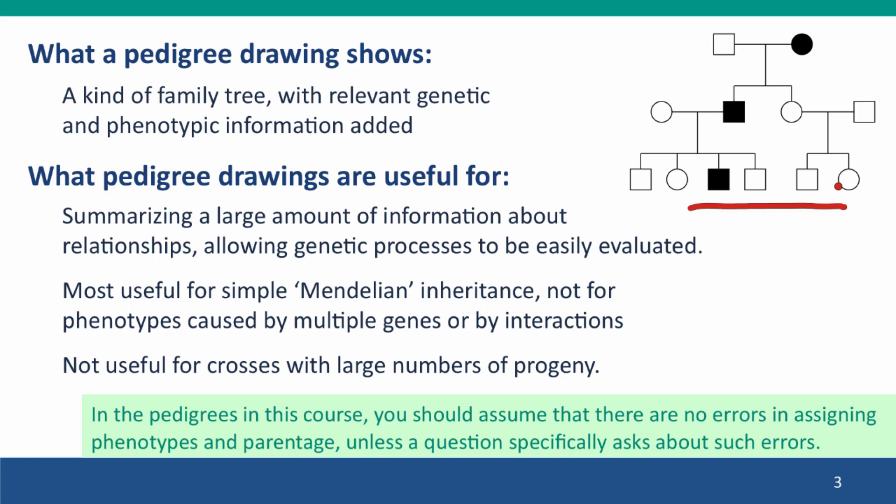In this course, you should assume that there aren't any errors in the pedigrees, either in assigning phenotypes or in assigning parentage. Both these kinds of errors are relatively common in real genetic history pedigrees because of lacking information, but here, assume that we've got our information correct.